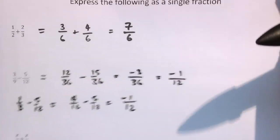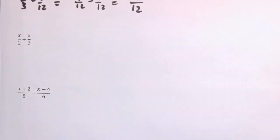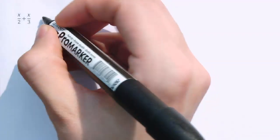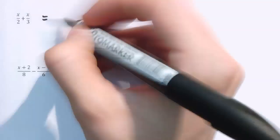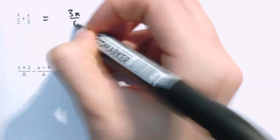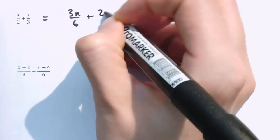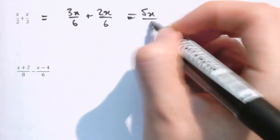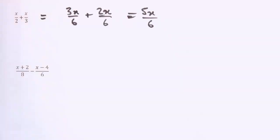The first two algebraic examples are simple because they still only have numbers in the denominators, so the common denominators are still numerical. For x over two plus x over three, the common denominator is six, so we get three x over six plus two x over six, which gives five x over six — exactly the same procedure as for ordinary fractions, just with x's around them.